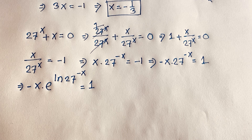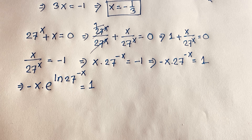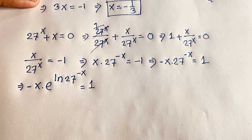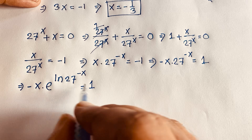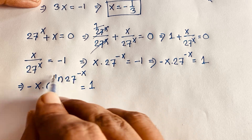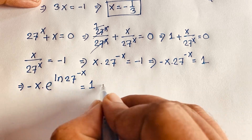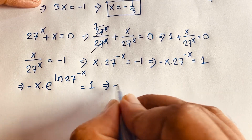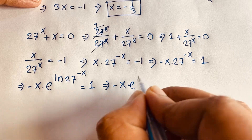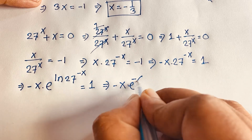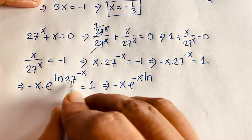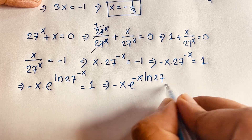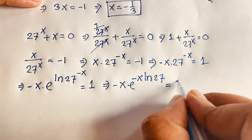What is the Lambert W function? We know that the Lambert W function satisfies: W(A · e^A) equals A. So I rewrite our expression in that form. Here, the exponent involves minus x times ln 27. The expression becomes: minus x · e^(minus x · ln 27) equals 1.